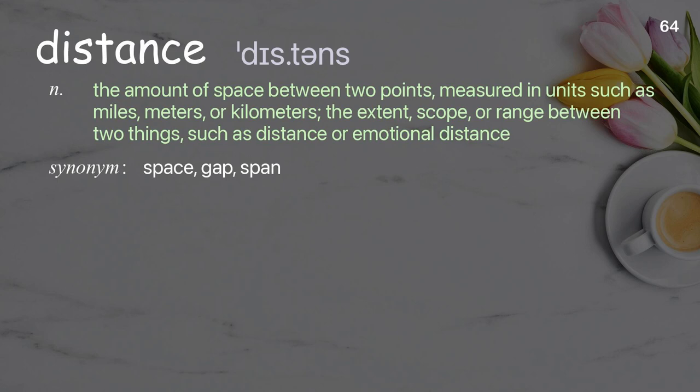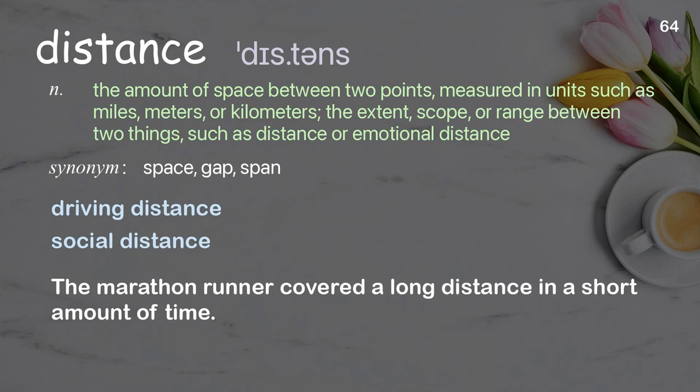Distance: the amount of space between two points, measured in units such as miles, meters, or kilometers; the extent, scope, or range between two things. Examples: driving distance; social distance; the marathon runner covered a long distance in a short amount of time.